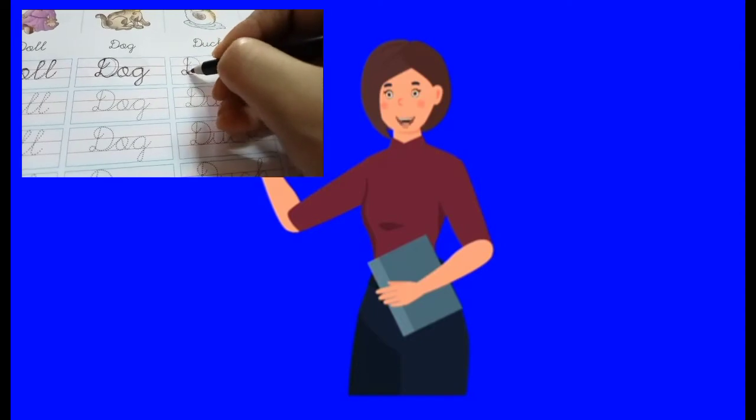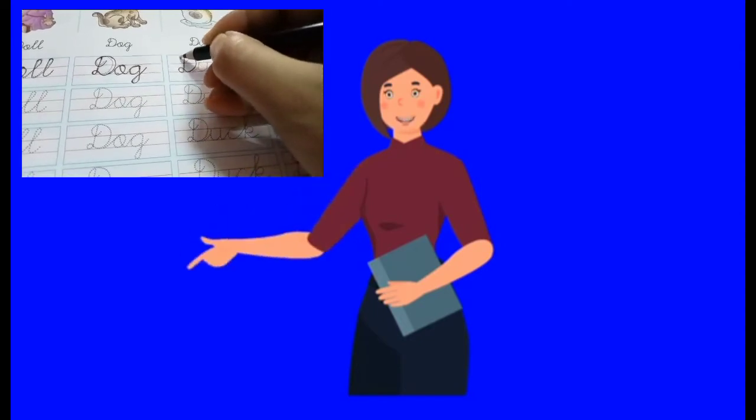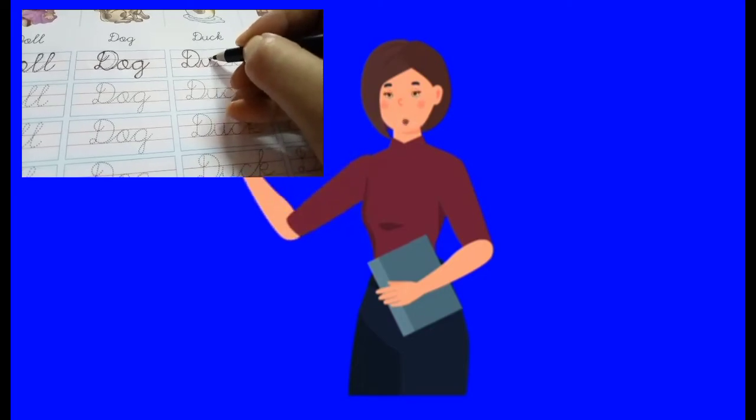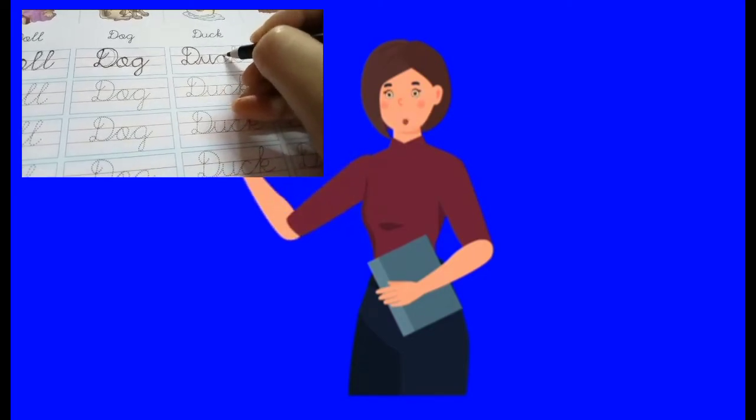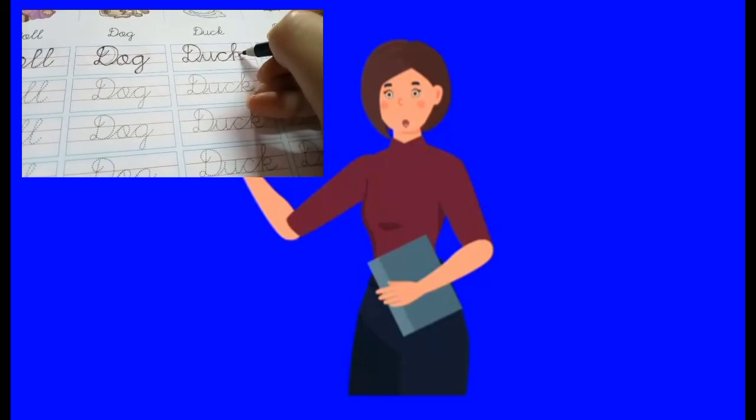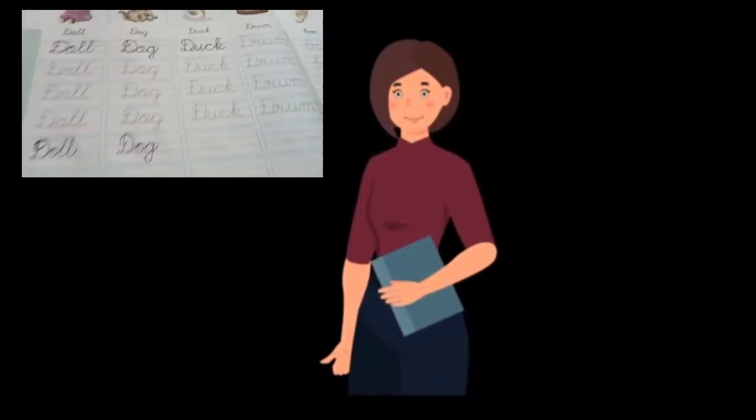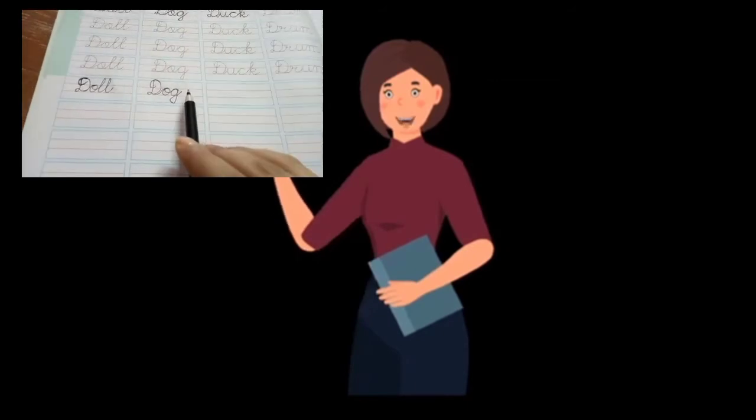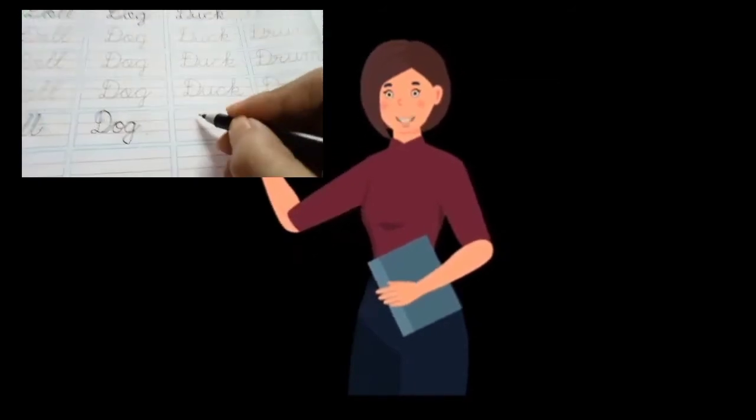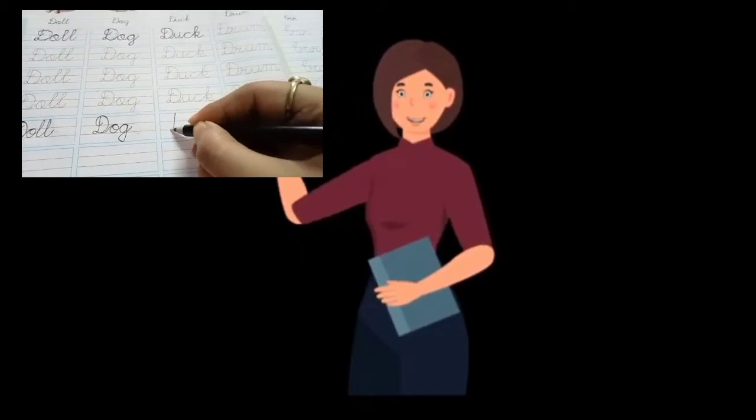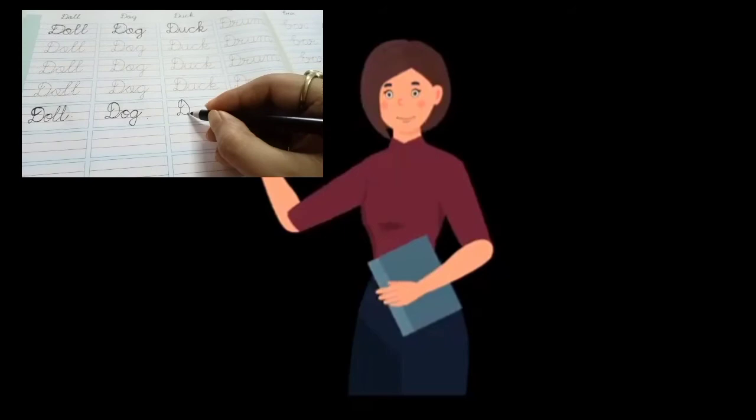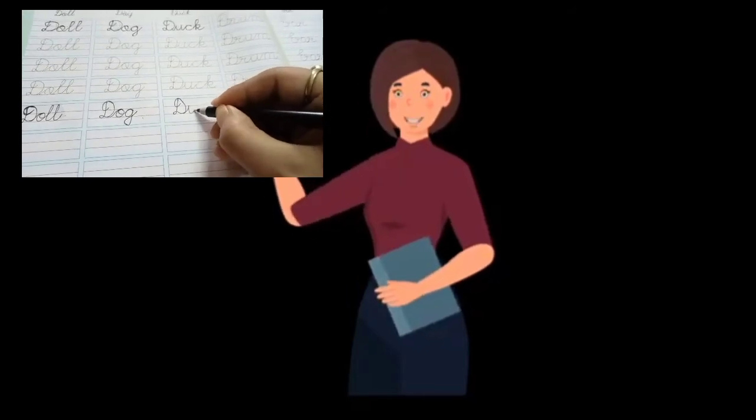Now we will write duck. So D goes same way. Changes U. You have already learnt how to write C, small letter, capital letter. K also you have learnt. So small letters when you write, keep in mind you are using these two lines, sometimes the upper one, sometimes the lower one. Capital letter you are using three lines sometimes, you are using four lines sometimes.